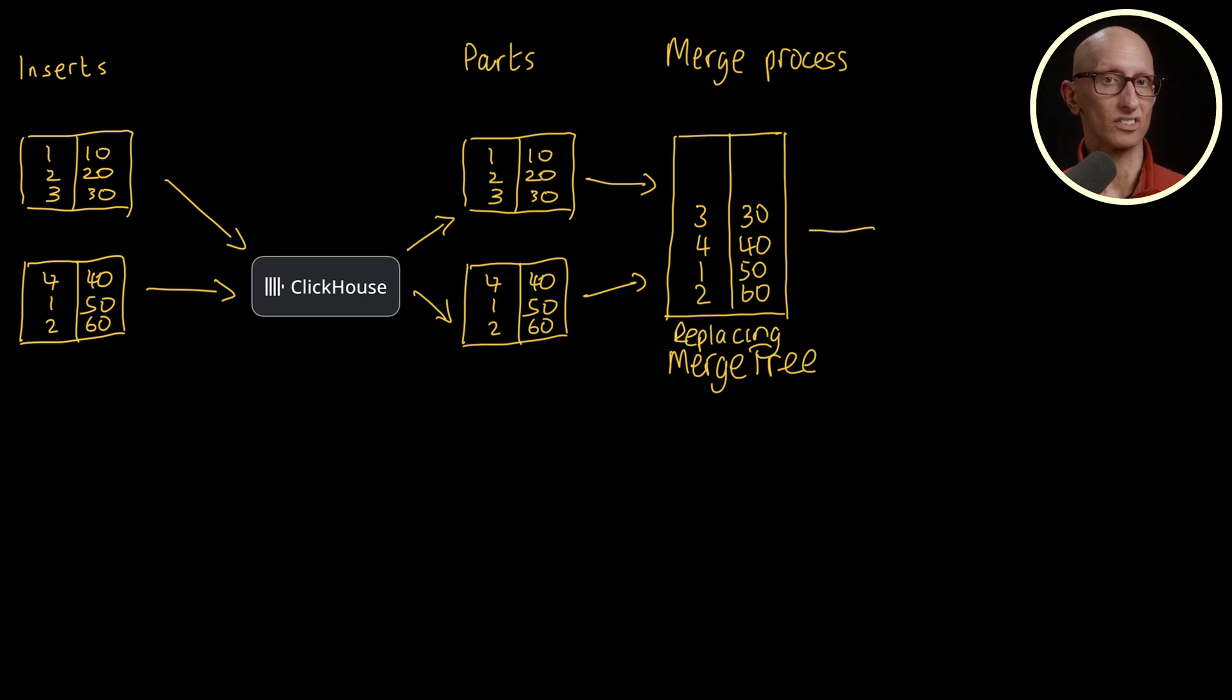ClickHouse also supports time to live, which is again done at merge time. So in this example, let's say our first record has expired, so that goes away. And the new part only contains the other records.